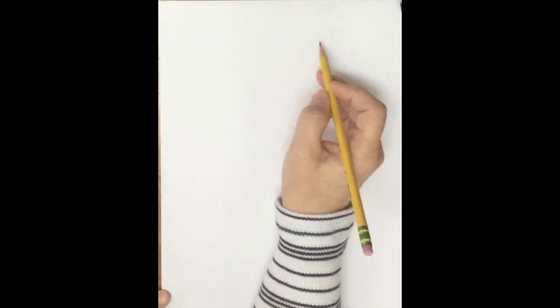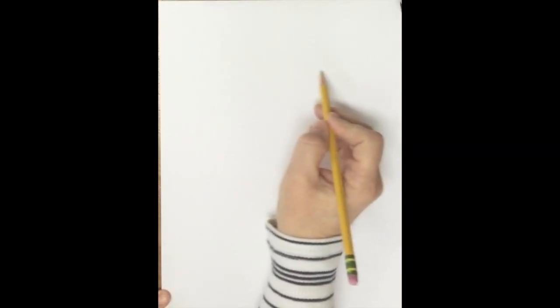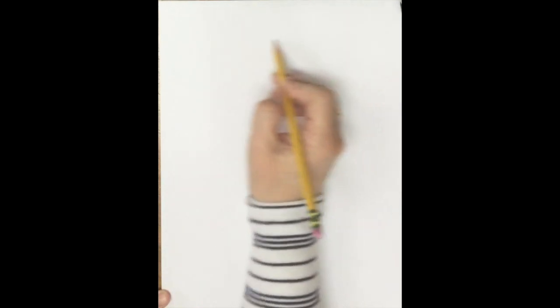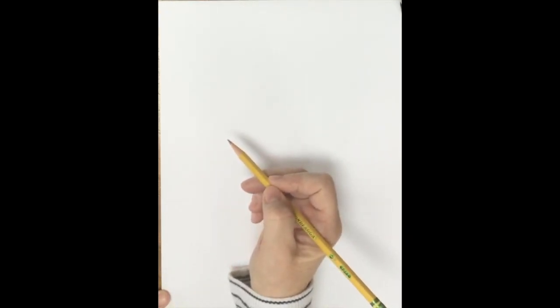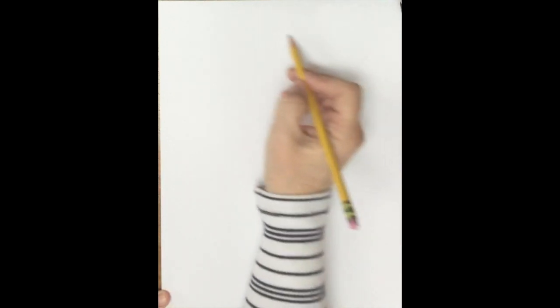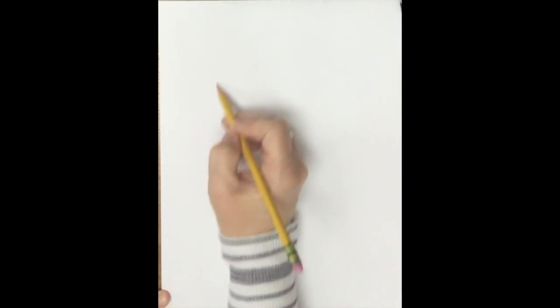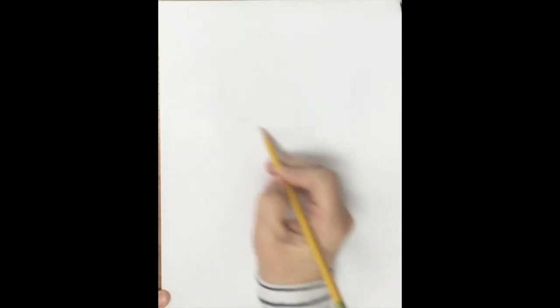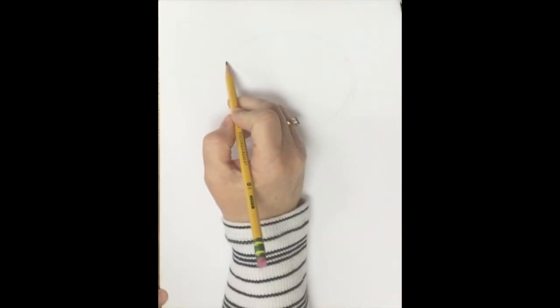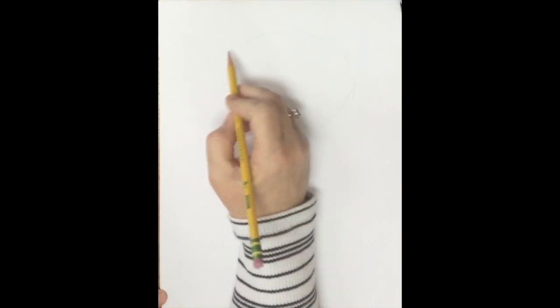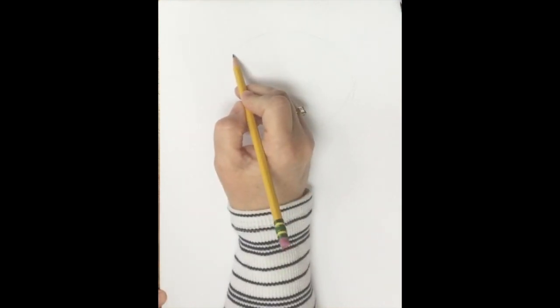We're going to start by drawing the knight's head. He has kind of a large head. So I'm doing the motion of what I think the head size will look like, and then I'll put my pencil down lightly and start making some circle shapes until I see a shape that I like.